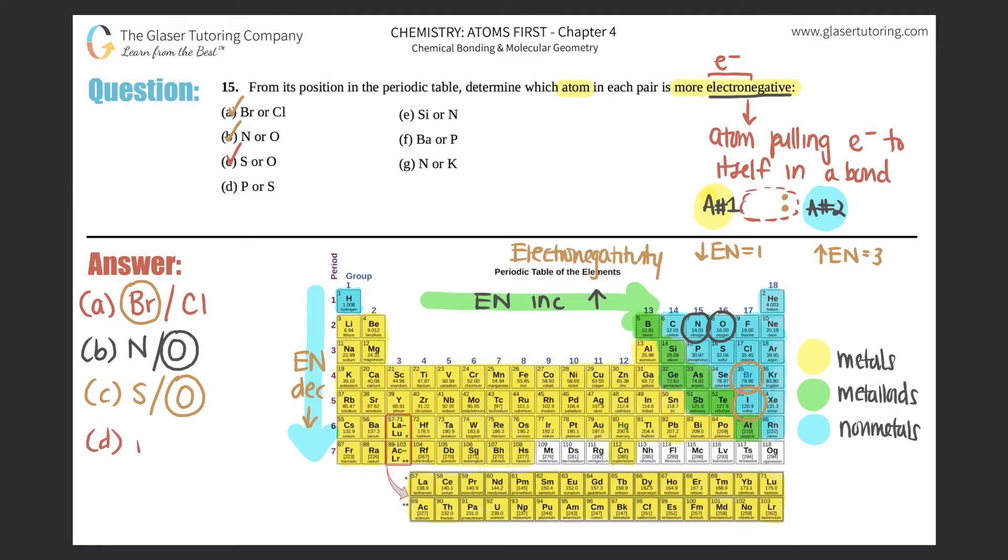D, phosphorus or sulfur? Phosphorus is here. Sulfur is right next to it. As you go from left to right, electronegativity increases. So sulfur would have the higher electronegativity than phosphorus because it's just more to the right. So sulfur would win here.